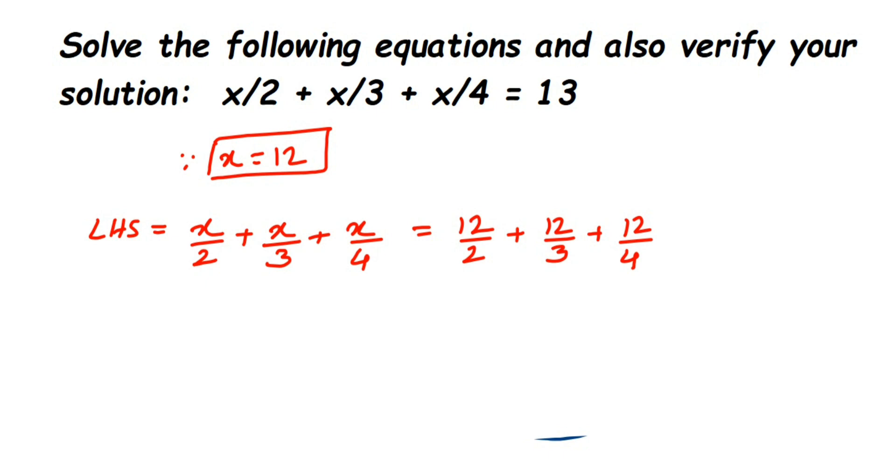We can cancel these numbers using the multiplication tables. 2 × 6 = 12, so 12/2 = 6. 3 × 4 = 12, so 12/3 = 4. 4 × 3 = 12, so 12/4 = 3. We get 6 + 4 + 3, which equals 13, and this 13 is the same as the RHS.